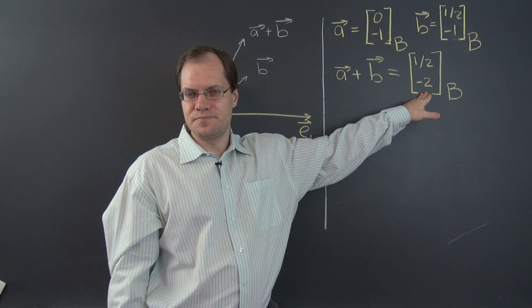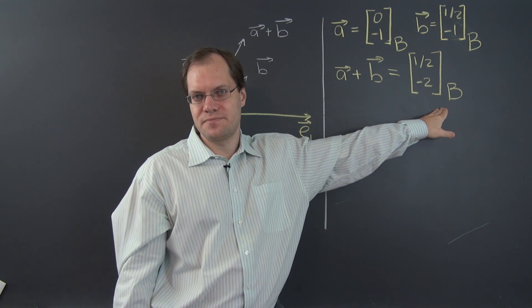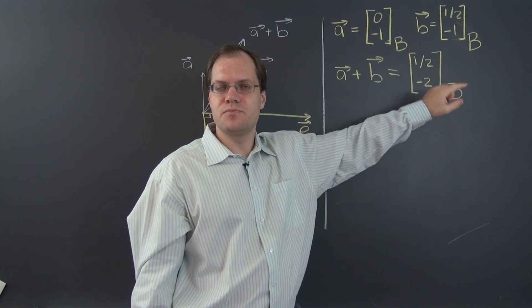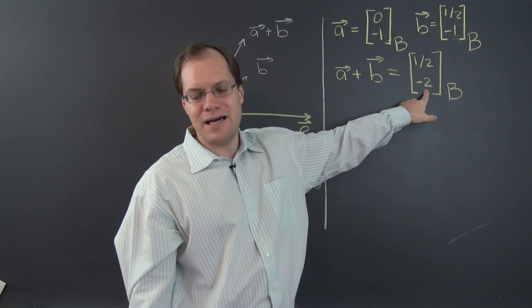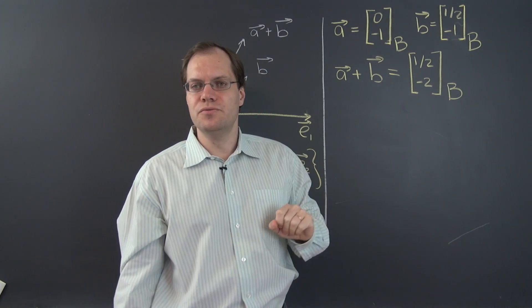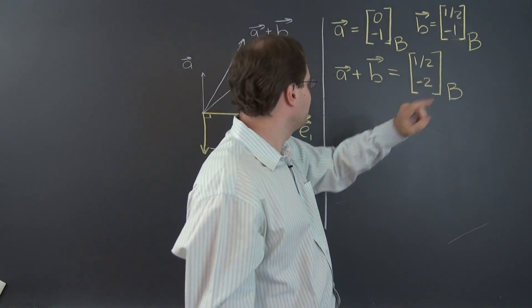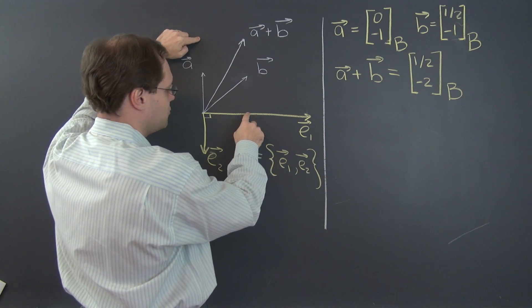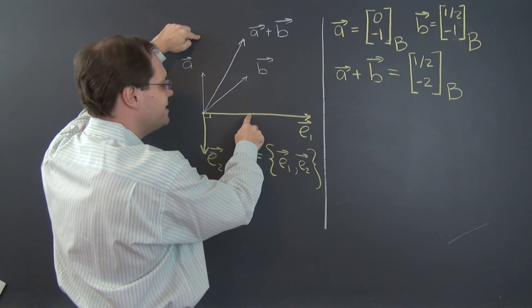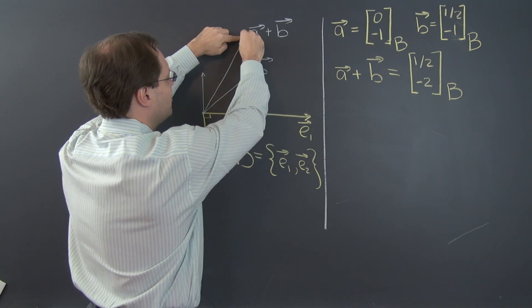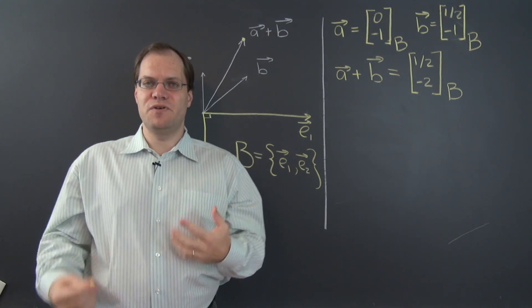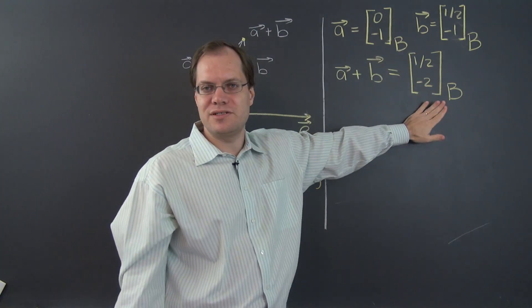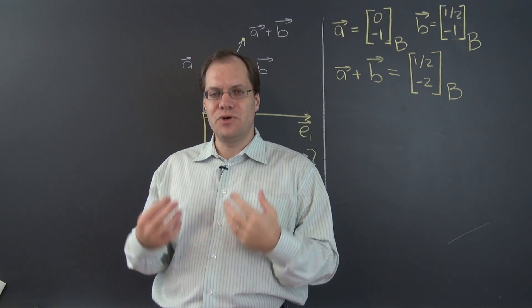And here comes a moment where we have to say the right thing. This is not the answer. These are the components of the answer. So A plus B equals 1 half negative 2 with respect to the basis B. So it's really saying that it's 1 half of E1 minus 2 of E2. Now let's see if that's correct. 1 half of E1 is right around here, 2 negative 2 E2 is right around here. Add them together and we arrive at the exact same vector as before. So what we previously did correctly, we now performed in the component space and we have demonstrated that we get the same answer.